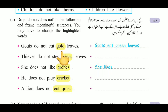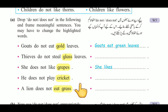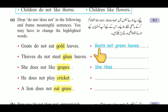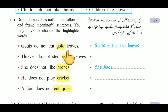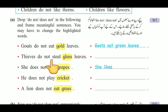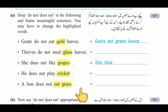The highlighted words to be changed are: gold, glass, grapes, cricket, eat grass. As an example: 'Goats do not eat gold leaves' — here we remove 'do not' and change 'gold' to 'green', giving us 'Goats eat green leaves.' In the same way, we need to change the remaining four sentences.